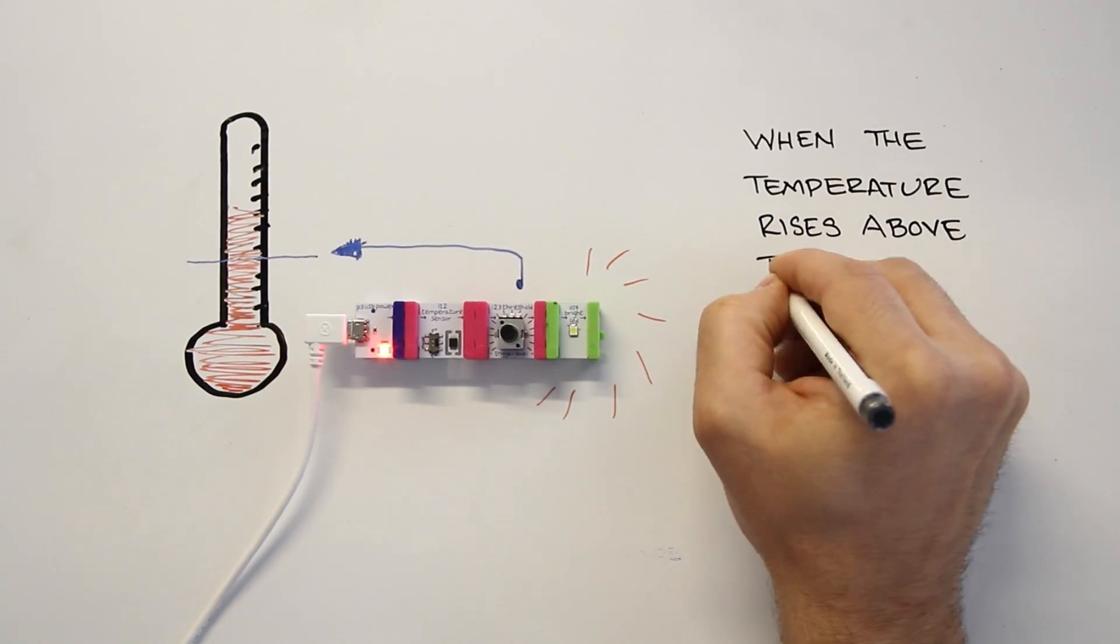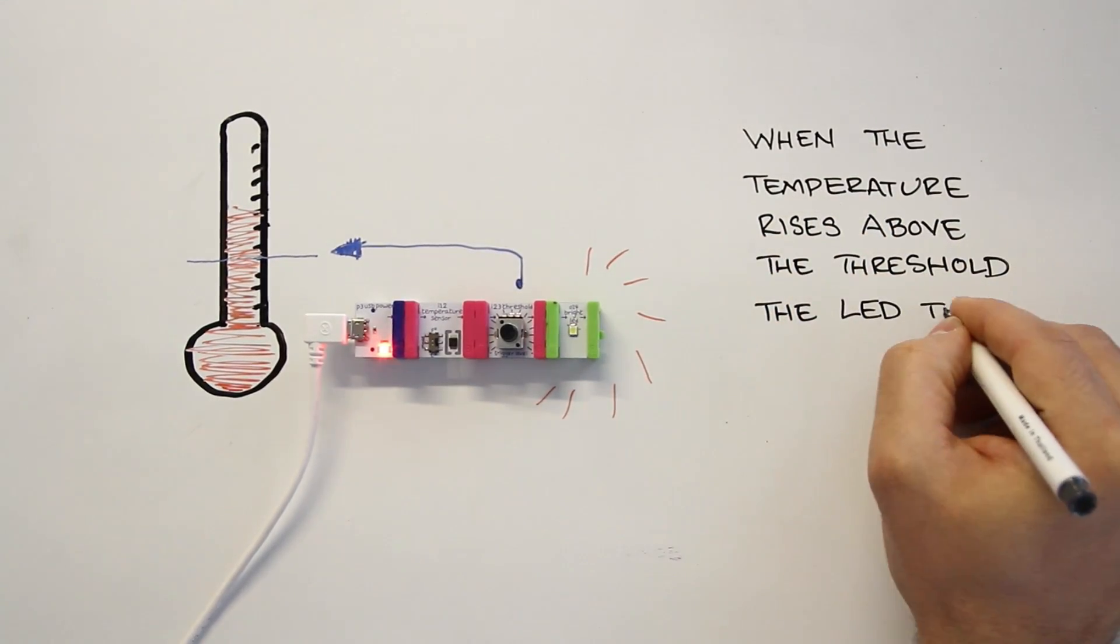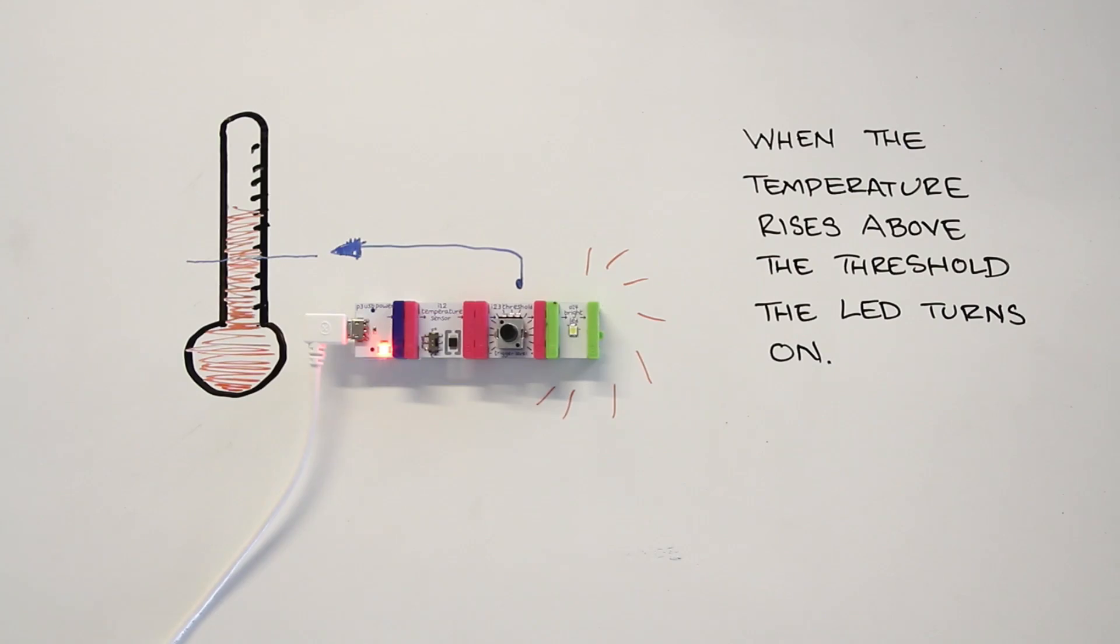This is where the threshold can work its magic. Using the knob on the module, we can set the threshold to go from off to on whenever the incoming signal rises above 50.